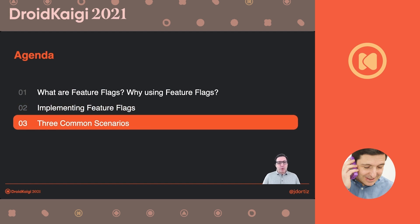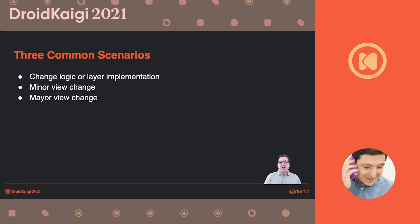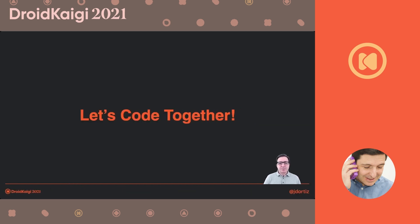Let's talk about scenarios. I'm going to mention three scenarios and do some live coding. The most common scenario is when you want to implement new logic in your source code, or implement a layer in a different way — in this case, persistence. Another thing you can do is a minor change in the UI, something trivial like a look and feel or some property of a view. Or you can do a complete remake of your view, which is a major change — not just a trivial one.